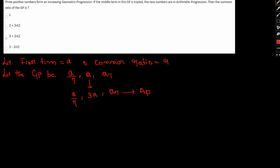So if this is an AP, then 3A will be (AR + A/R)/2. We can write this. Therefore 6A can be written as AR² + A.